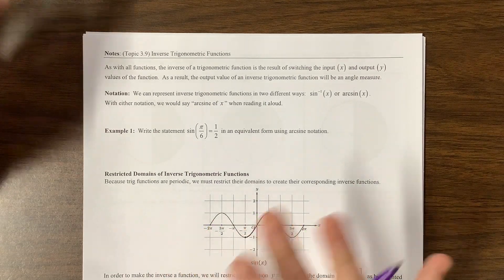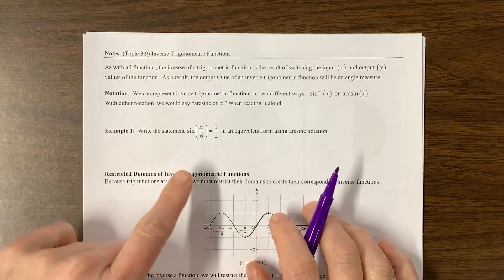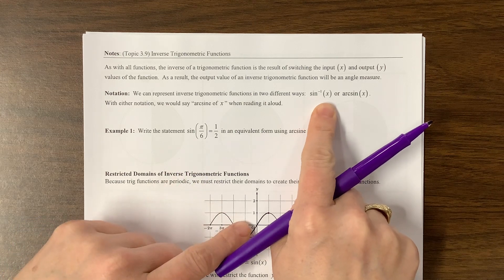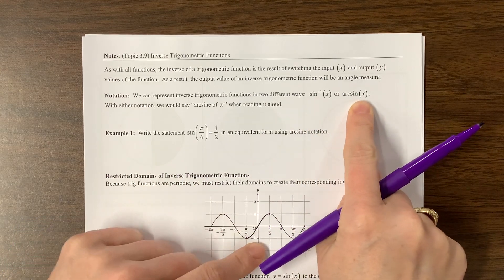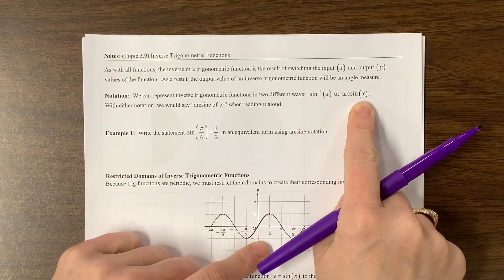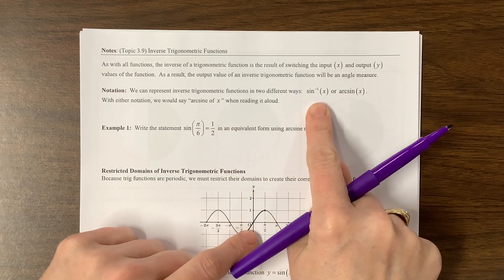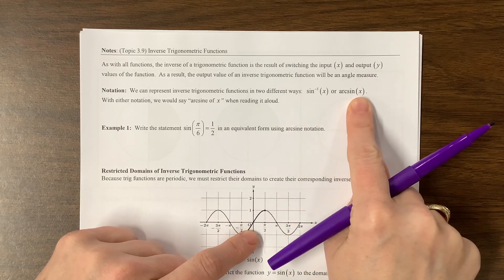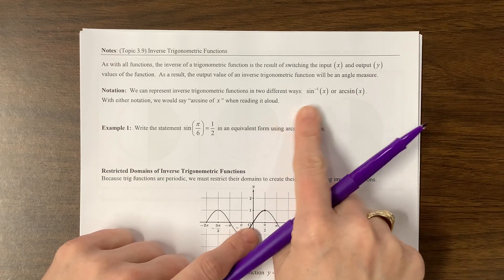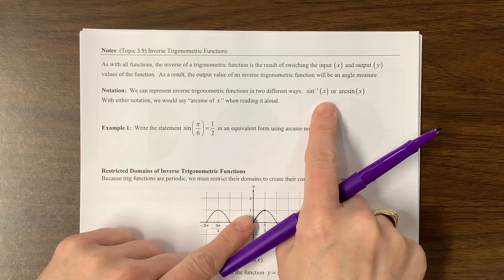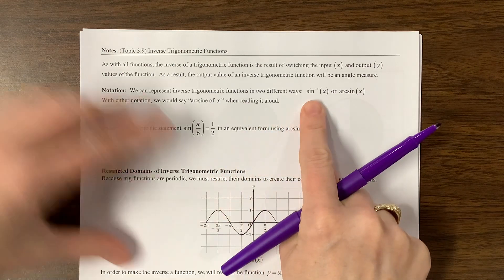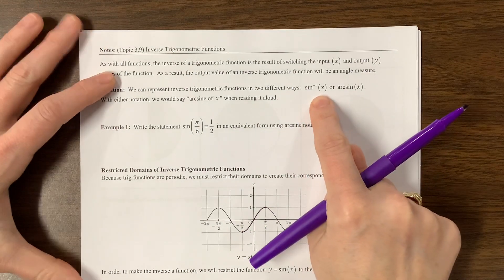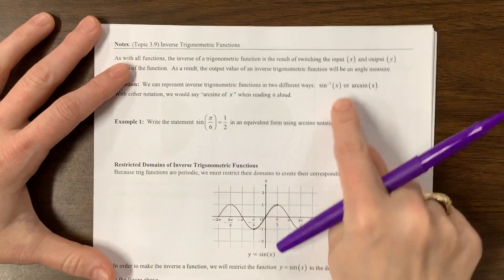So talking about the inverse trig functions, we will use either sine to the negative one of x, or we can call it arcsine. With either notation, we would say arcsine when reading it aloud. I usually say inverse sine of x on this, and I would say arcsine x here, so maybe I have been wrong for all these years. Anyway, it's the inverse sine of x. If that's wrong, well, my bad. I may have to break that habit.